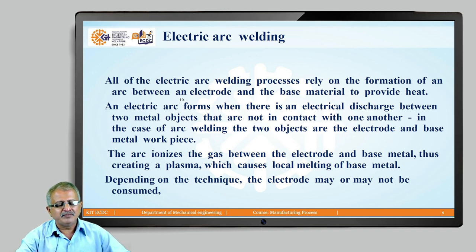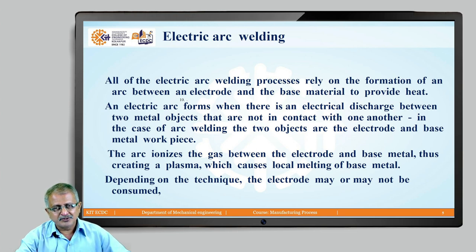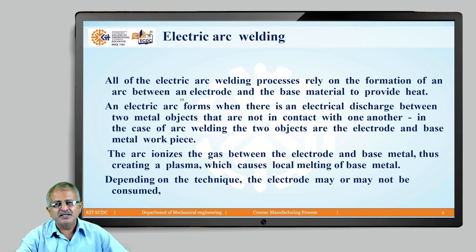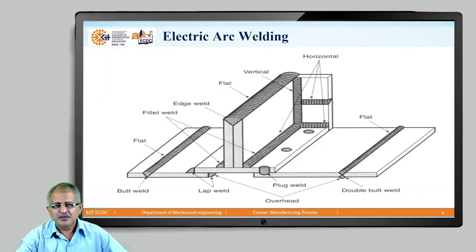Electric arc welding mostly relies on formation of an arc between the electrode and the base metal. This electric arc is formed when the electrode is scratched against the base metal at the point where the weld is needed. That causes an electric discharge between the two metal objects, resulting in ionization of the gap between the electrode and base metal, creating a plasma which causes localized heating of the base metal. This is the process principle of electric arc welding.